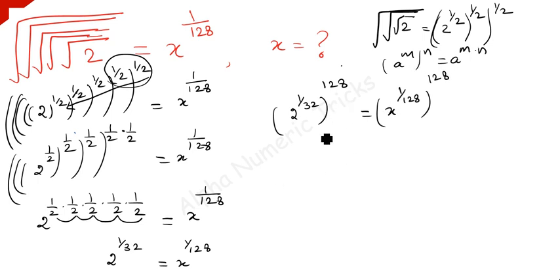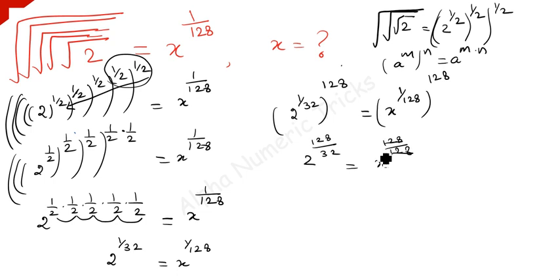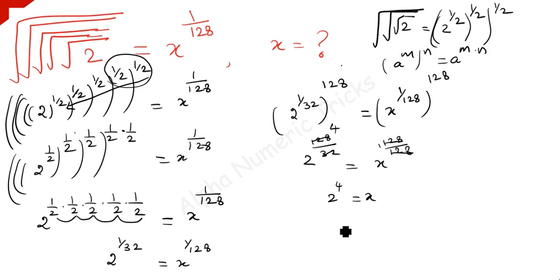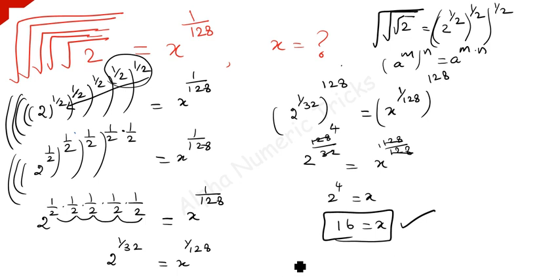Using the same formula, we can write this to be 2 to the power 128 over 32 is equal to x to the power 128 over 128. Here these two terms get cancelled, giving x to the power 1. And here 32 goes into 128 four times — 4 times 32 is 128. So 2 to the power 4 is equal to x. What is 2 to the power 4? That is 16. So 16 is equal to x. This is the value of x — this is our answer.